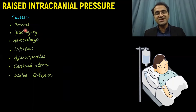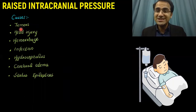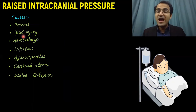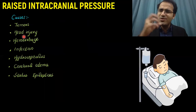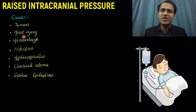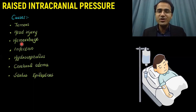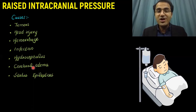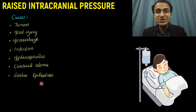Raised intracranial pressure can occur due to any tumor in the brain, head injury resulting in hematoma formation or depression of bone into the brain, hemorrhage, infection, meningitis, encephalitis, hydrocephalus, cerebral edema, or status epilepticus. These are all conditions that can result in raised intracranial pressure.